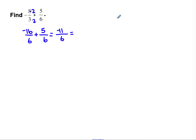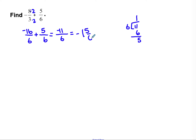Depending on the number, sometimes you can change it into a mixed number in your head, but if you can't, you can use division. Set up 11 divided by 6: 11 goes on the inside, 6 goes on the outside. 6 goes into 11 one time — that's my whole number. 1 times 6 is 6; 11 minus 6 is 5. My remainder is 5, and those pieces are sixths. So my final answer is negative 1 and 5 sixths.